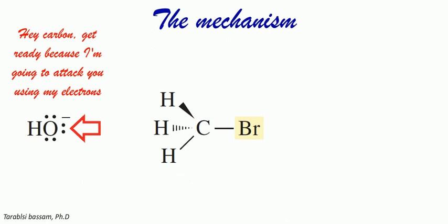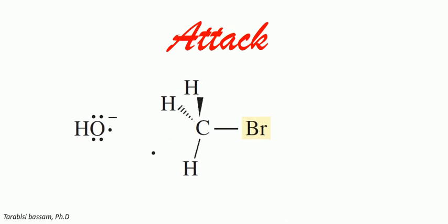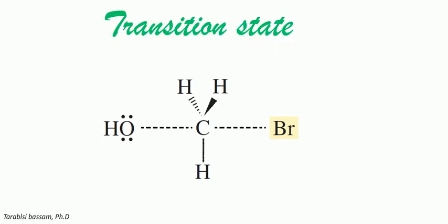As we can notice, only one electron moves from the hydroxide to the carbon to create this new bond. But carbon has already four bonds, so in order to create a new one, another one should be broken, which is the one between the carbon and the bromine.